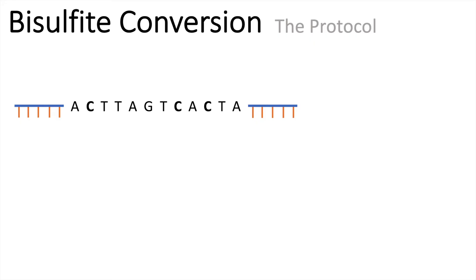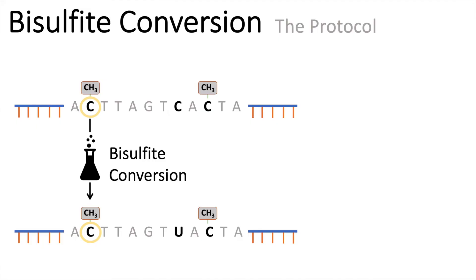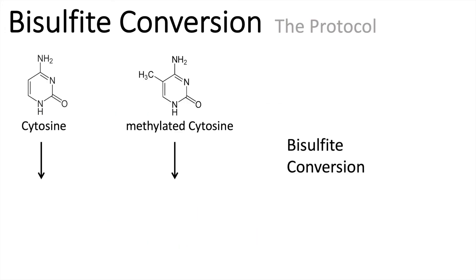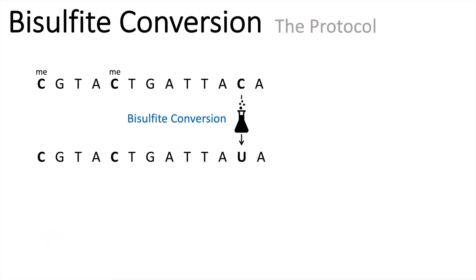Now we speak about bisulfide conversion. DNA methylation involves the cytosines — some cytosines are methylated and some are not. With bisulfide conversion, the methylated cytosines will stay the same; they will stay methylated. However, the cytosines which are unmethylated will be replaced by uracil. Here again we have the cytosine and the methylated cytosine: with bisulfide conversion the cytosine will change to uracil in the DNA, while the methylated cytosine is untouched by bisulfide. So after bisulfide conversion, we generate a DNA where all unmethylated cytosines are replaced by uracil.